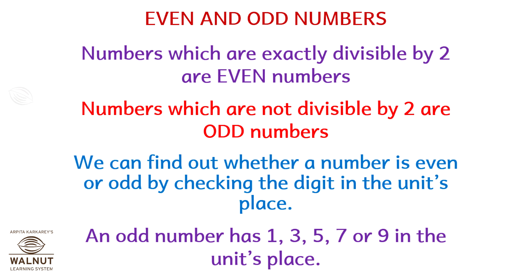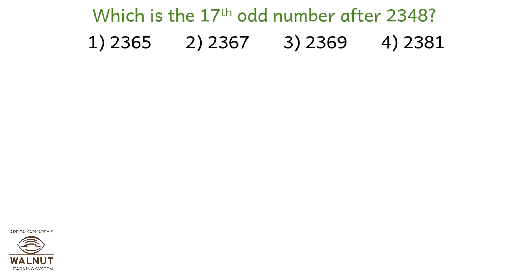An odd number has 1, 3, 5, 7, or 9 in the units place. For example, what is the 17th odd number after 2348?